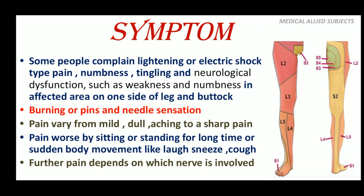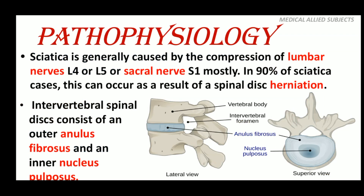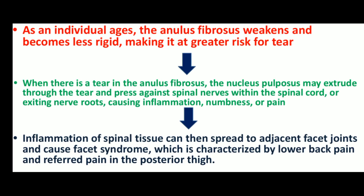Through this figure we can understand the nerve supply and the specific region. Sciatica is generally caused by compression of lumbar nerve L4 or L5 or sacral nerve; in 90% of cases sciatica results from spinal disc herniation. The intervertebral spinal disc consists of an outer hard annulus fibrosus and inner soft nucleus pulposus. As an individual ages, the hard annulus fibrosus weakens and becomes less rigid, making it at greater risk for tear. When there is a tear, the soft nucleus pulposus may extrude through the point of tear and press against a spinal nerve or excite the nerve root, causing inflammation, numbness, or pain. Inflammation of spinal tissue can then spread to adjacent facet joints, causing facet syndrome, characterized by lower back pain and radiating pain in the posterior thigh.